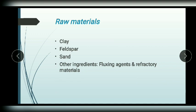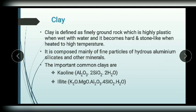Now let us discuss the raw materials required for the manufacturing of ceramics: clay, feldspar, sand, and other ingredients such as fluxing agents and refractory materials. The first raw material is clay, which is the most important. It is finely ground rock and is highly plastic when wet with water — meaning it can be easily shaped or moulded in moist condition — and becomes hard and stone-like when heated to high temperature.